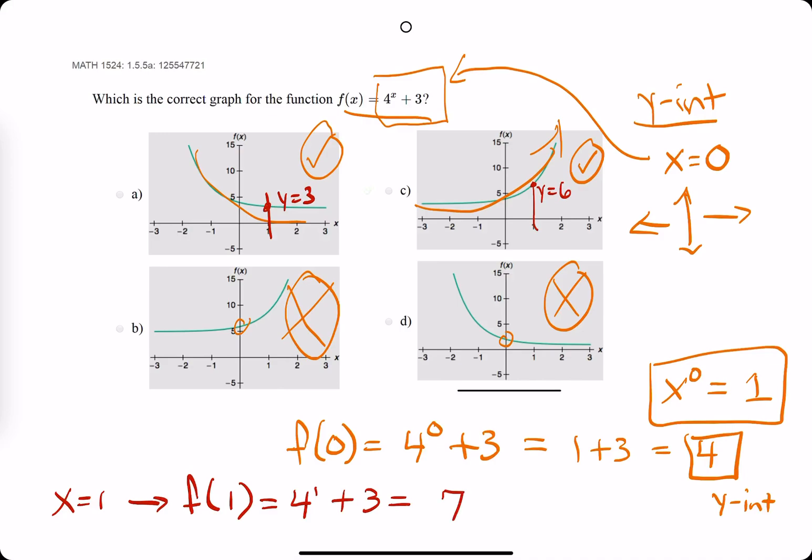So A is not the correct answer because 3 is nowhere near 7. But C is looking good because it turns out to be y = 7, not 6. C is the correct answer.